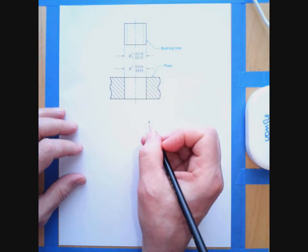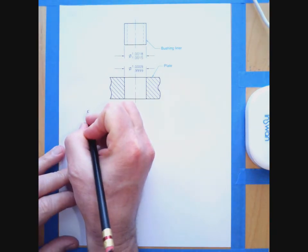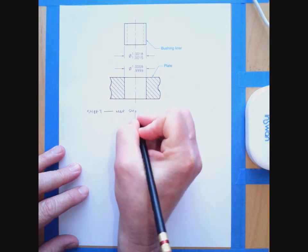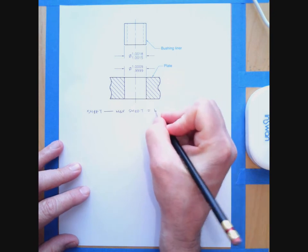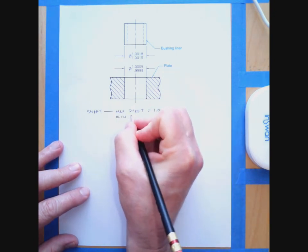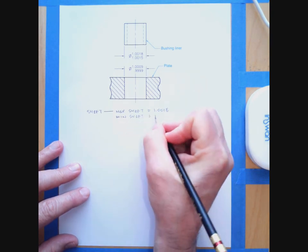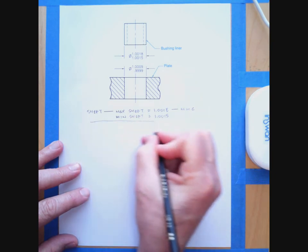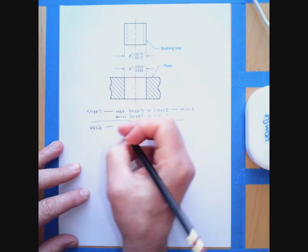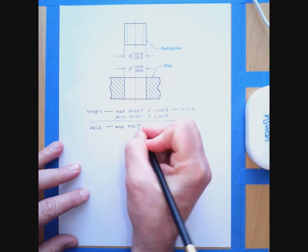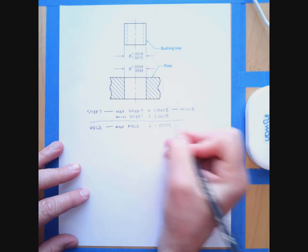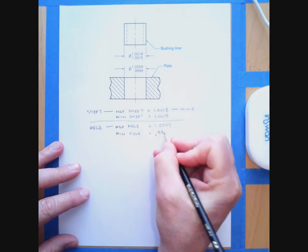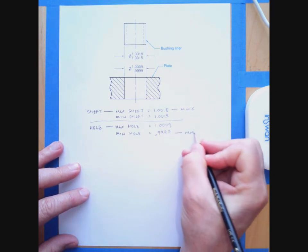Let's run through the same calculation. The maximum shaft allowable is 1.0018, and the minimum shaft allowable is 1.0015. Remember, the maximum shaft is also known as the MMC size of the shaft. For the hole, the maximum hole diameter is 1.0009, and the minimum hole diameter is 0.9999. The minimum hole is the MMC size of the hole.